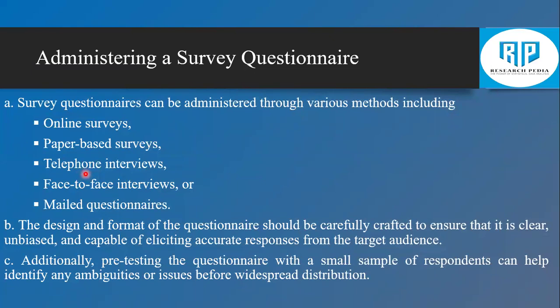If a person cannot be accessed face to face, you can contact them by telephone, conduct an interview, record the communication, and transform those recordings into useful information. Then there is face-to-face interviews, another category for qualitative data, and mailed questionnaires where you send emails to respondents to get particular information.